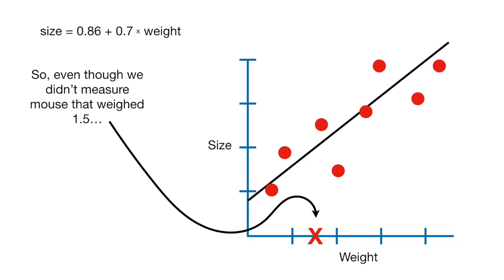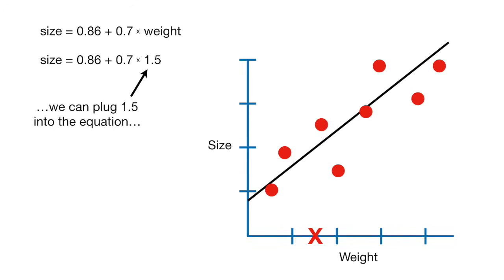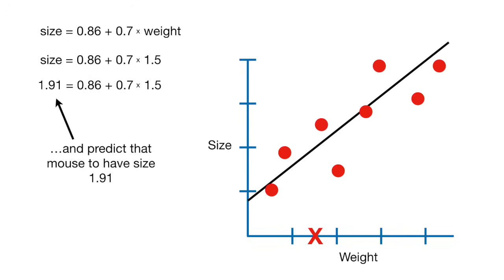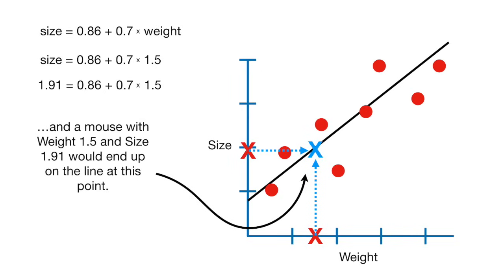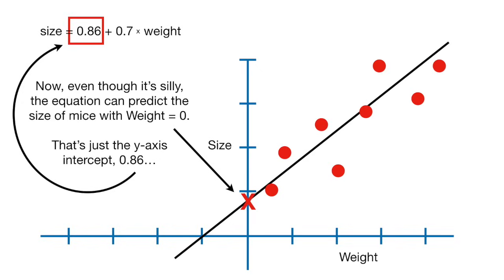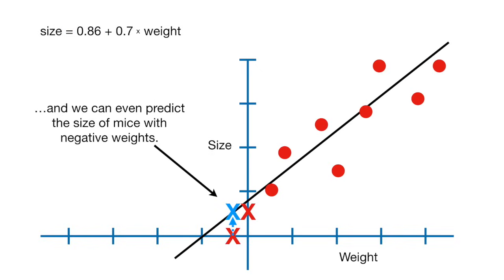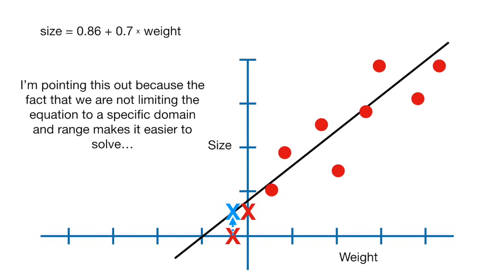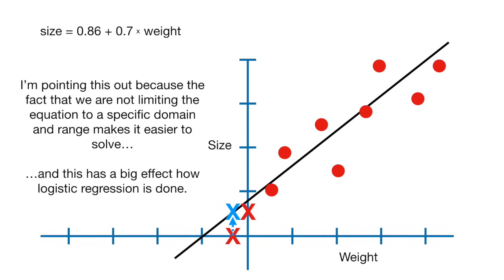So even though we didn't measure a mouse that weighed 1.5, we can plug 1.5 into the equation and predict that mouse to have size 1.91. And a mouse with weight 1.5 and size 1.91 would end up on the line at this point. The equation can even predict the size of mice with weight equals 0 — that's just the y-axis intercept, 0.86 — and even mice with negative weights. The fact that we are not limiting the equation to a specific domain and range makes it easier to solve, and this has a big effect on how logistic regression is done.